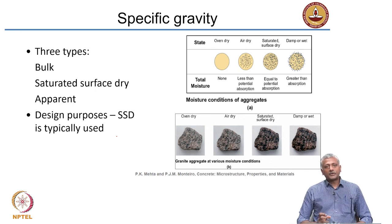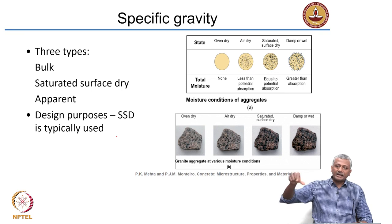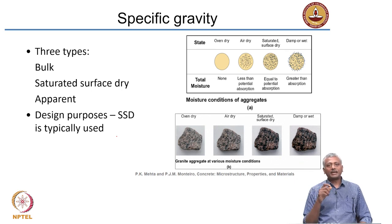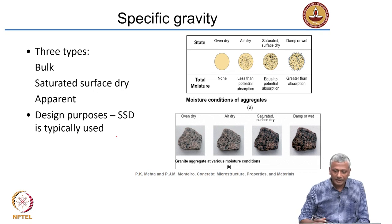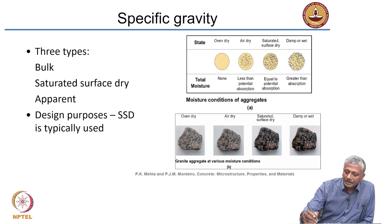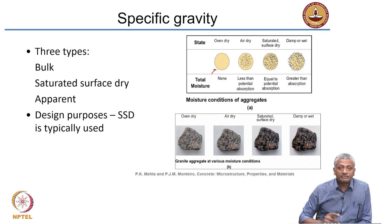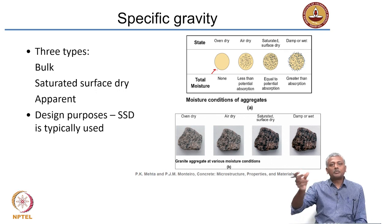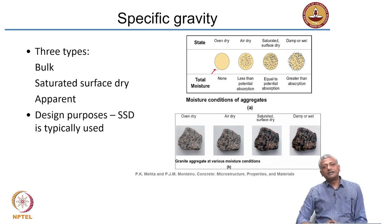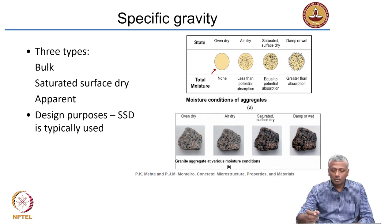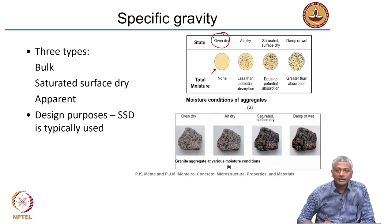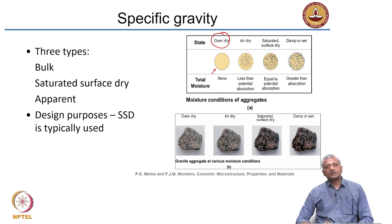Because of this porosity, if I take a piece of aggregate and dip it in water, I can experience different types of moisture states within the material. If you do not have any moisture, if you take this aggregate and put it inside the oven at 100 degrees Celsius, it drives away all the water from the aggregate. There is no moisture — that is called the oven dry state of the material.